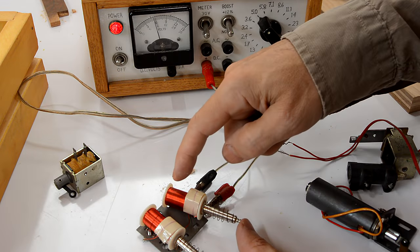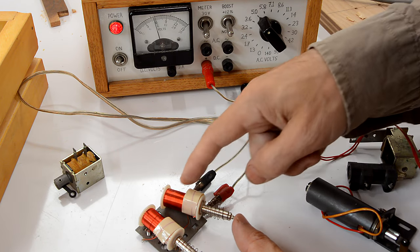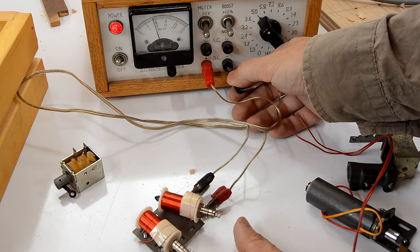A solenoid is just a coil of wire that forms an electromagnet, and when it's energized, it pulls an iron core into it.